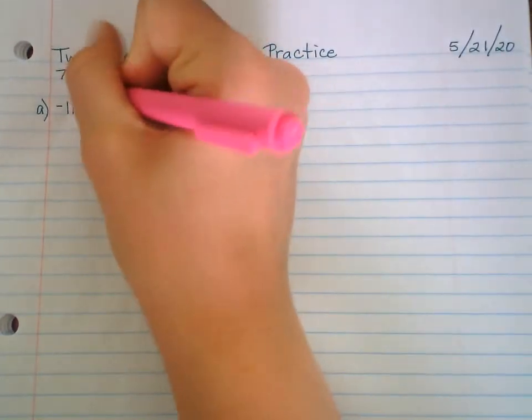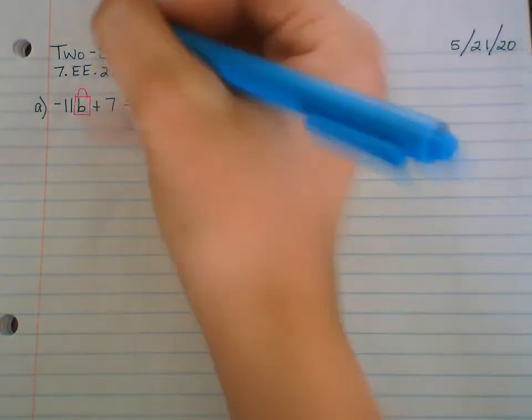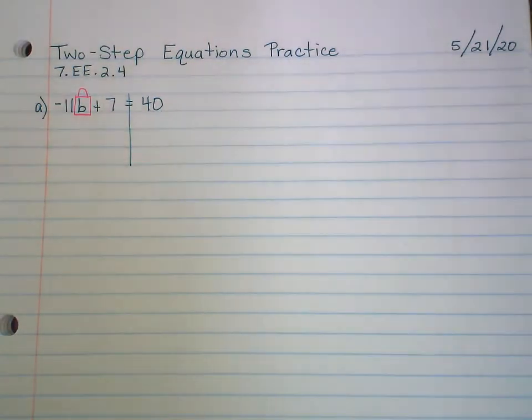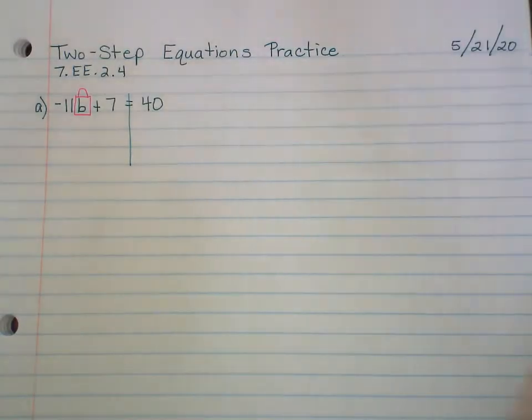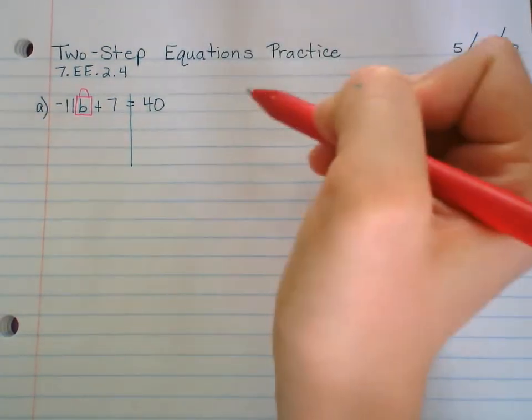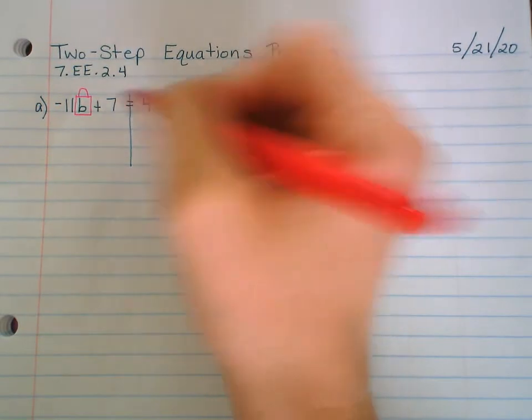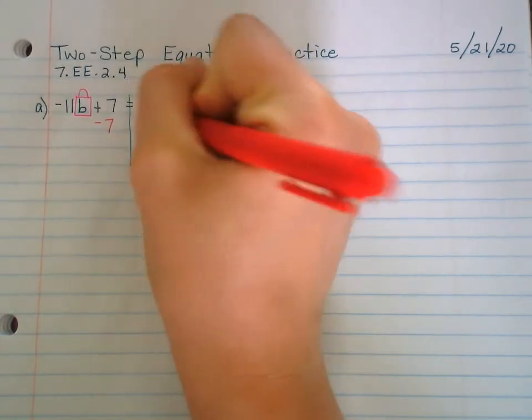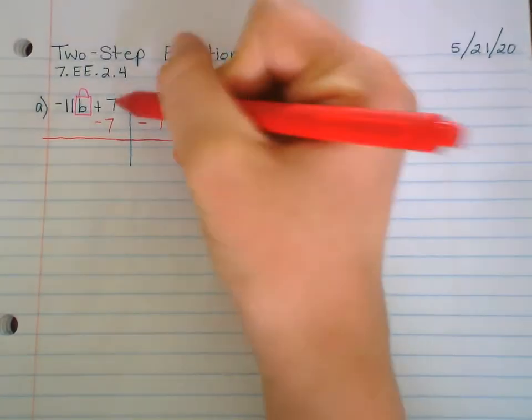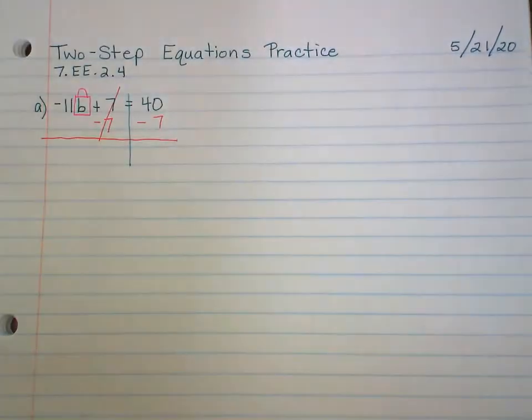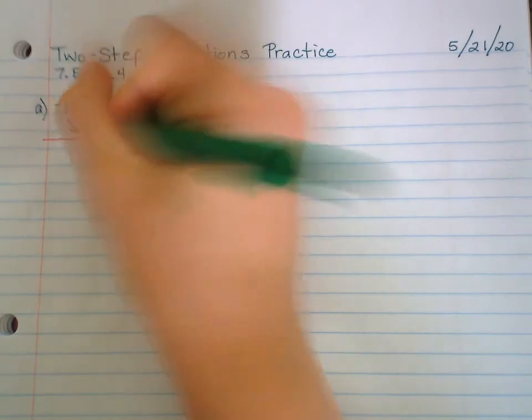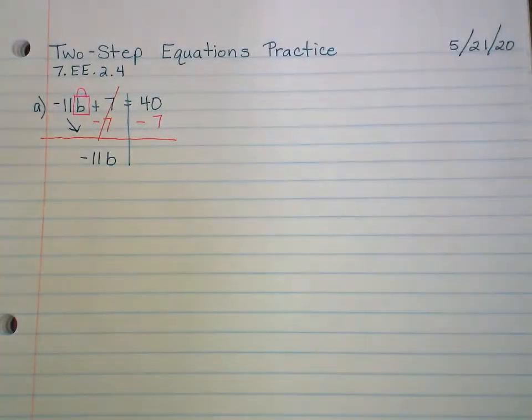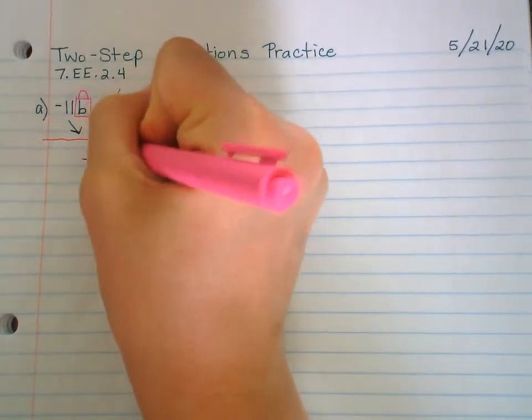Our first problem is -11b + 7 = 40. Maybe go ahead and see if you can solve this one on your own. We did learn two-step equations back November 15th, so the steps stay the same. Step one, box up the variable, lock it up. And step two, we draw our line.